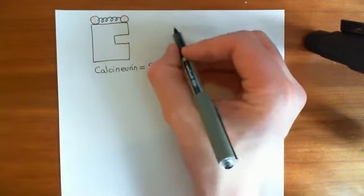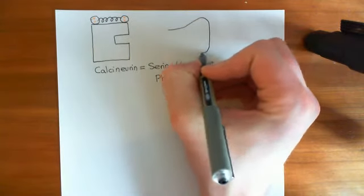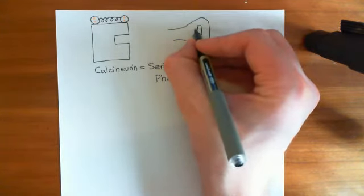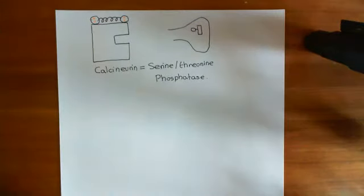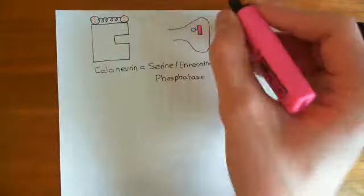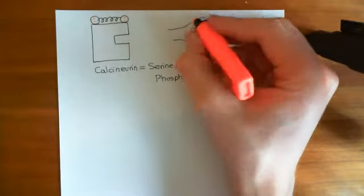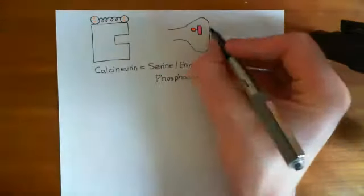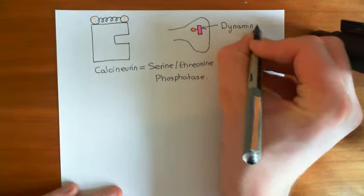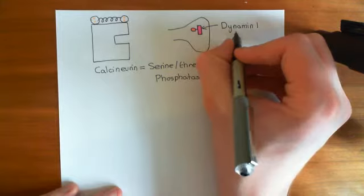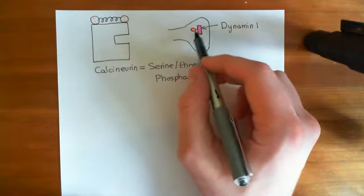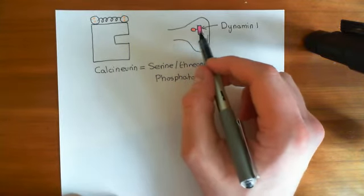In the cytoplasm of our axon terminal, there is a protein called dynamin-1, which usually has a phosphate group on it. When the cell is at rest — not having an action potential arriving, with no calcium signal — this protein usually has a phosphate group bound to it. That phosphate group is stopping it from pinching off vesicles.